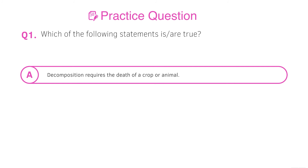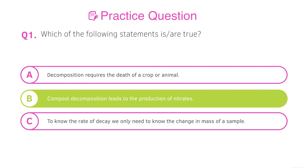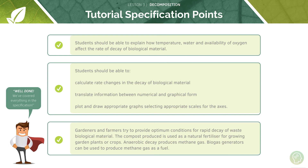Let's go through the answers. A — decomposition requires the death of a crop or animal: No, decomposition is ongoing. B — compost decomposition leads to the production of nitrates: Yes, and nitrate ions are really important for plant growth. C — to know the rate of decay, we only need to know the change in mass: False, we also need to know the time over which this change in mass has occurred. D — there is no such thing as too hot for a decomposer: Also false — too hot and we get denaturation of the enzymes in the decomposer and therefore a loss of functioning and a lower rate of decay.